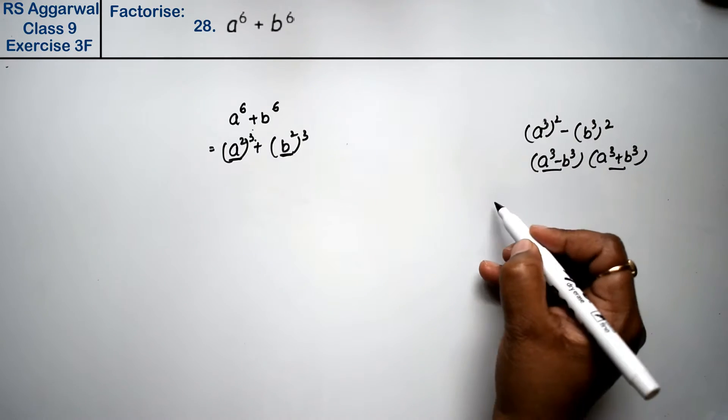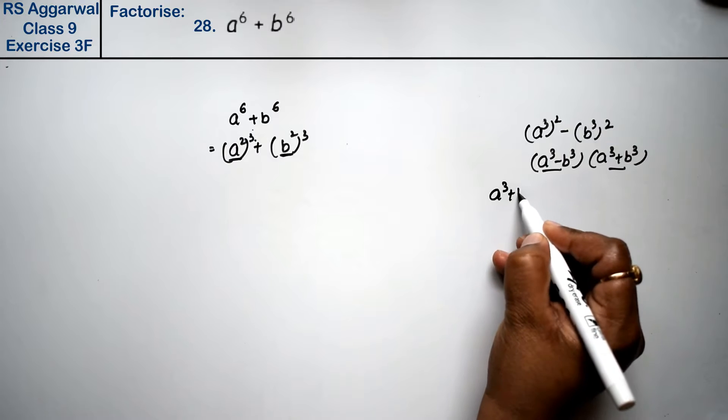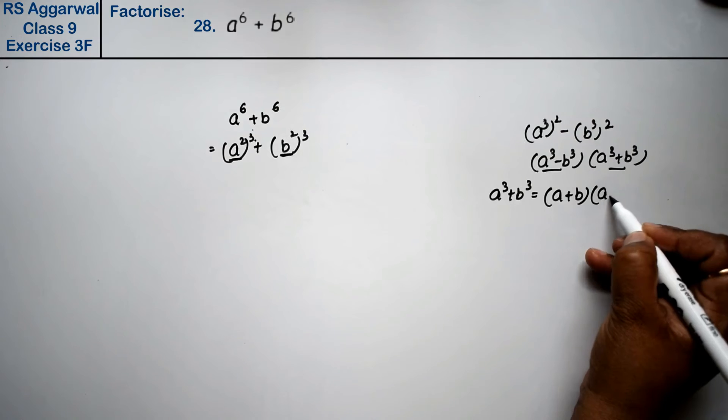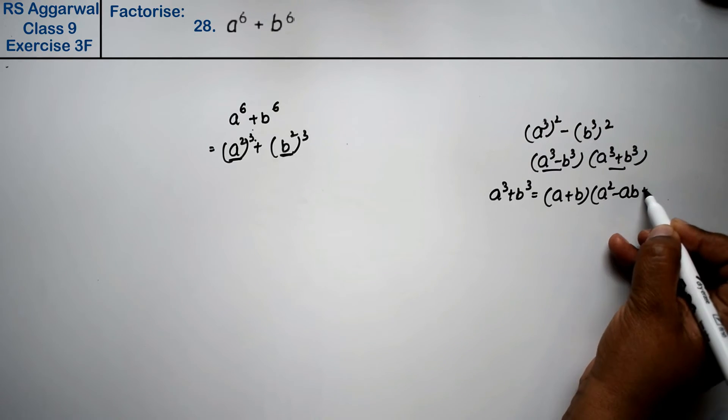So, a^3 plus b^3 formula: (a plus b)(a^2 minus ab plus b^2).